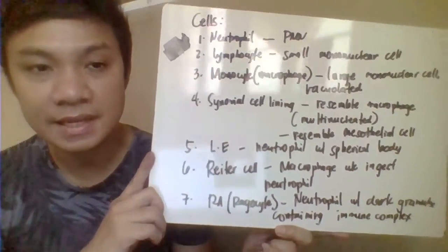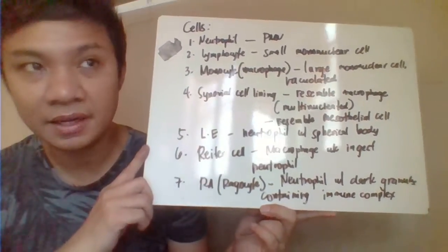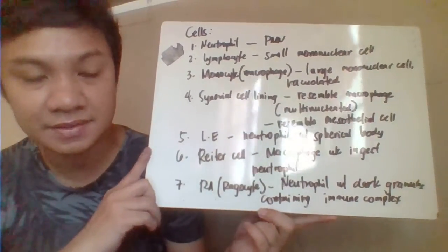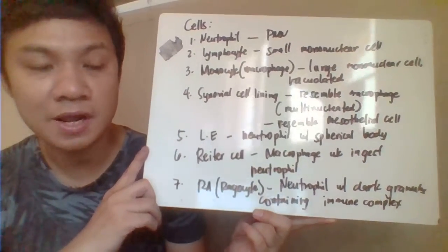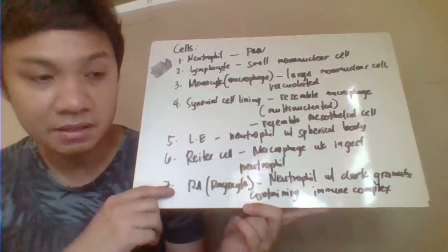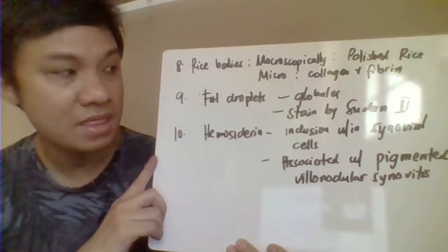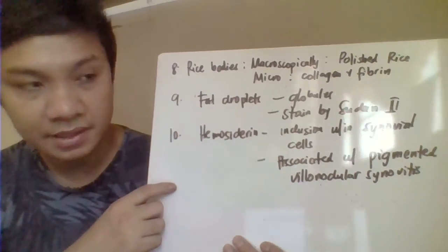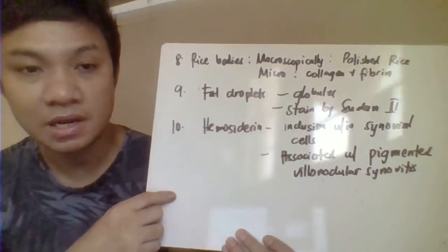Special cells include: the LE cell, related to SLE — this is a neutrophil that has ingested nuclear material, described as a neutrophil with a spherical round body. The Reiter cell is a macrophage that ingests neutrophils. The RA cell or ragocyte is a neutrophil with dark granules containing immune complexes, related to rheumatoid arthritis. Rice bodies macroscopically resemble polished rice but microscopically contain collagen and fibrin. Fat droplets are globules stained by fat stains like Sudan III. Hemosiderin is found within synovial lining cells in clusters and is associated with pigmented villonodular synovitis.